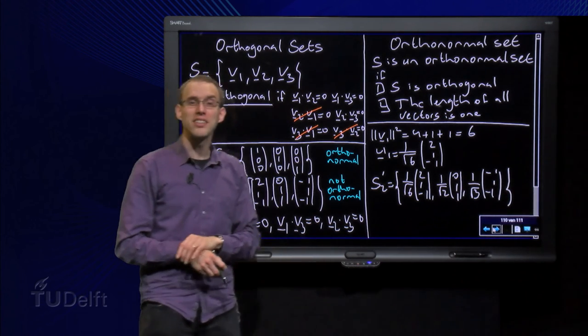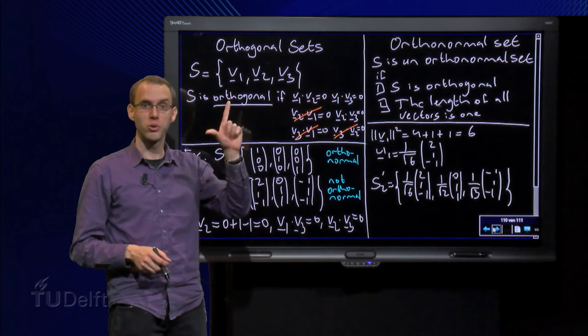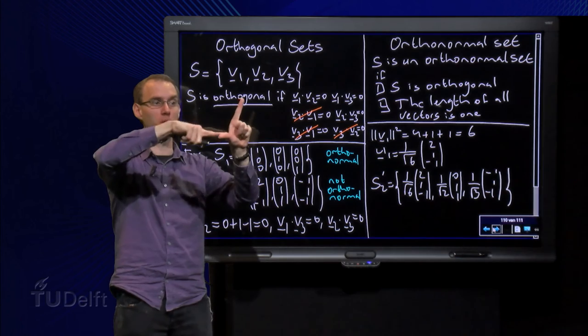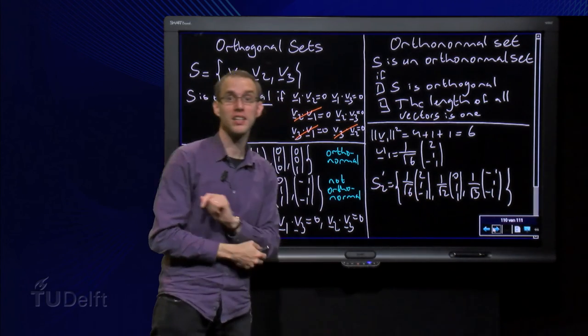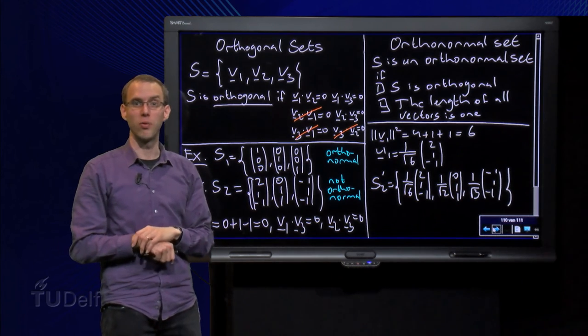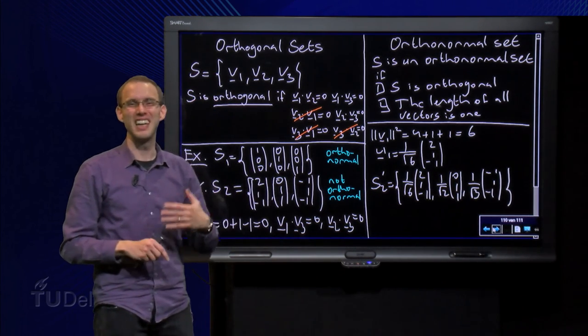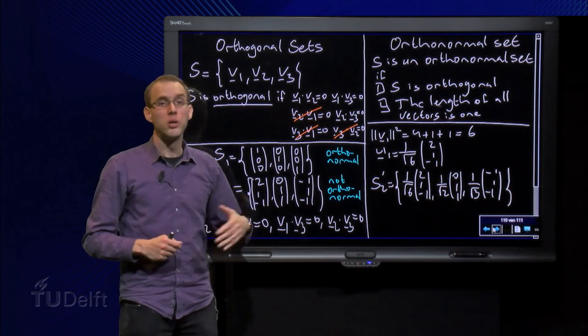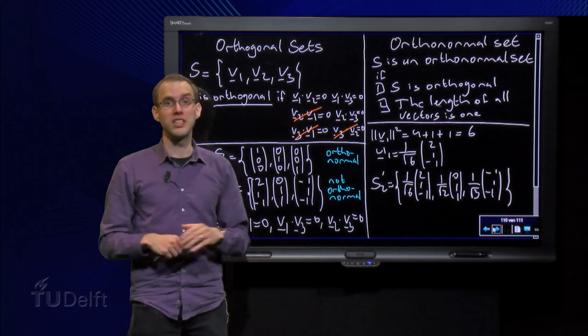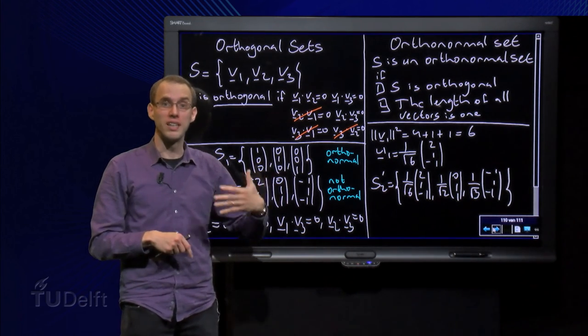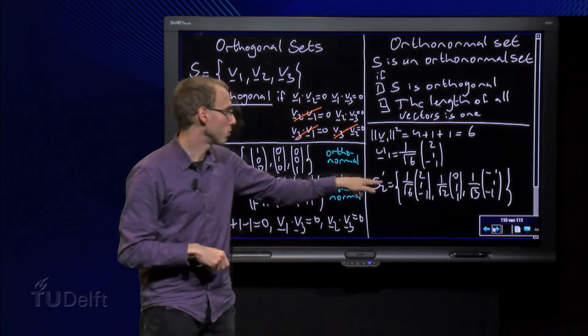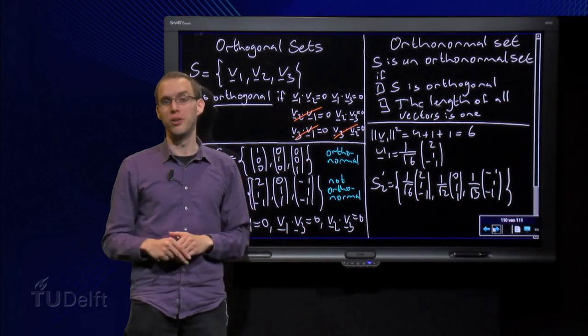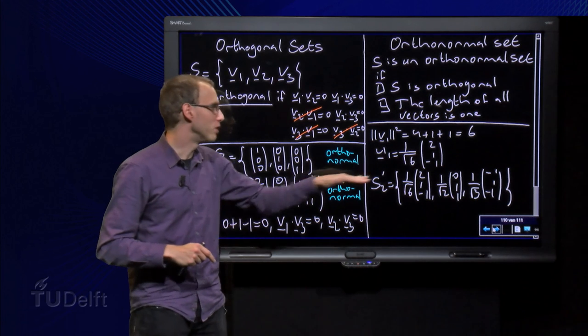If I change the length of a vector, it doesn't matter for the fact whether they are orthogonal or not. These vectors are orthogonal. If I would make this vector longer, then it is still orthogonal to this one, so it is still an orthogonal set, but now also all lengths of the vectors are 1. Well, as you see, the vectors do not look really nice anymore, with all those square roots floating around. So sometimes in some formulas, orthonormal sets are much nicer to use, however you pay a price because orthonormal sets look much more ugly than just orthogonal sets. So it depends a bit on the particular problem which one is best to use.